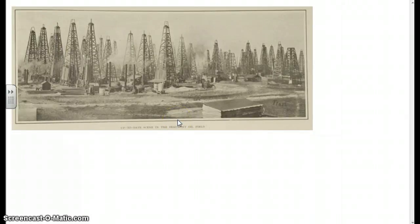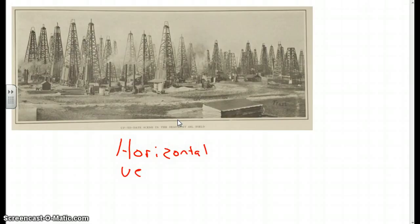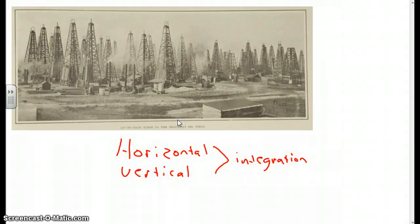He did this in two different ways, like the other Robber Barons. He used what's called horizontal integration, and he also used vertical integration. Horizontal integration is easy to explain — it's just where one company takes over all the other companies in that industry. Vertical integration is not so easy to explain because basically what a Robber Baron does is they control the whole means of production from the ground up.